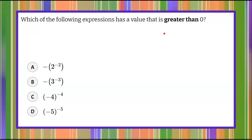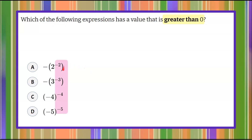Welcome back. Reviewing — greater than 0 is what we're looking for from these four expressions. I can see that when I look at these expressions, they all have a negative exponent.